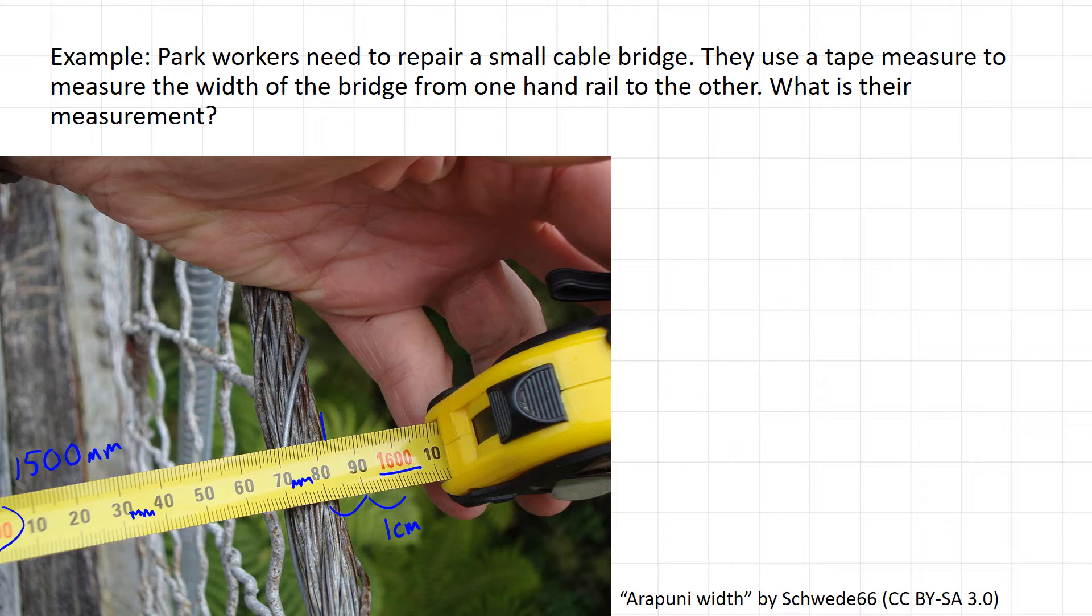We'd be at 1500 millimeters, and then we're 80 along—so 1500, 80—and then count the ticks: 81, 82, looks like 83. So 1583 millimeters according to our measuring tape.